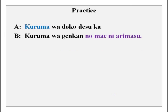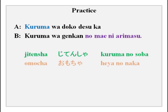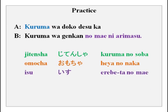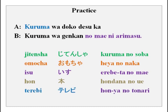Kuruma no soba. Heya no naka. Erebeetaa no mae — elevator is elevator. Hon dana no ue — hon dana is a bookshelf. Honya no tonari — honya is a bookstore. Kaidan no soba — kaidan is stairs and soba means nearby. There are some new words and some old words here which you can practice.